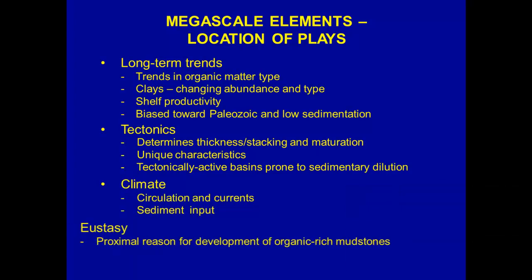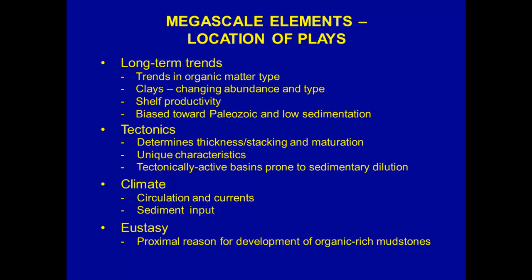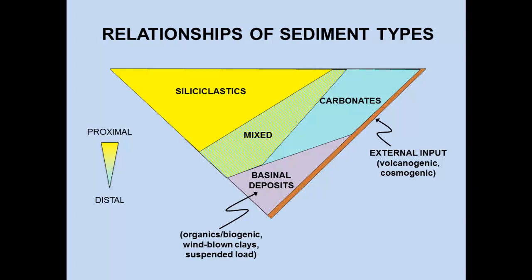Eustacy is perhaps the proximal reason for the development of organic-rich mudstones. When you look at a given sedimentary section, eustacy usually determines where sedimentary input is cut off, and then you can see the expression of a black shale. As you raise sea level, it permits the deeper water facies to spill up onto the shelf where you typically see these things. The basic relationship is an onshore-to-offshore gradient — more sediments close to shore and diminishing amounts as you go offshore, with siliciclastics onshore, carbonates on the shelf, and basinal deposits further out.